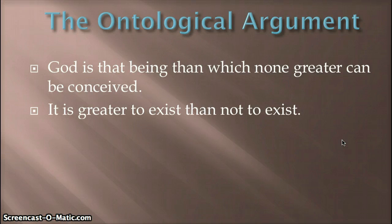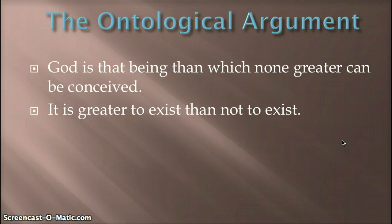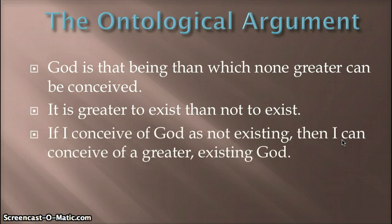The second premise is that it's greater to exist than not to exist. Think of a pizza — think about an existing pizza versus a non-existing pizza. Which one would you rather have? Which one is the better pizza? Obviously, something that exists is better than something that doesn't exist. Therefore, if I conceive of God as not existing, I can conceive of a greater, existing God. I'm thinking God doesn't exist — well, I can think of a greater God, which would be one that did exist, and so that existing God would be the greatest possible being, not the non-existing God.